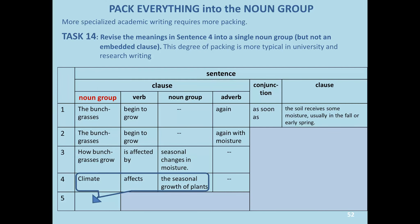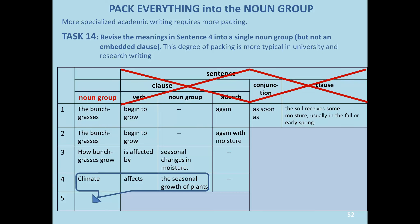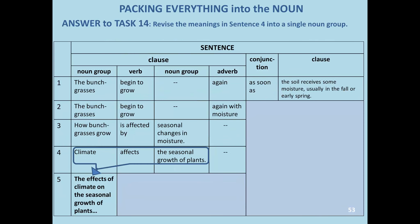Moving on to task 14: revise the meanings in sentence 4 into a single noun group. This degree of packing is more typical in university and research writing. Pause the video here. The answer to task 14 is: in a single noun group — 'the effects of climate on the seasonal growth of plants' — which absorbs the meaning 'climate affects the seasonal growth of plants.'